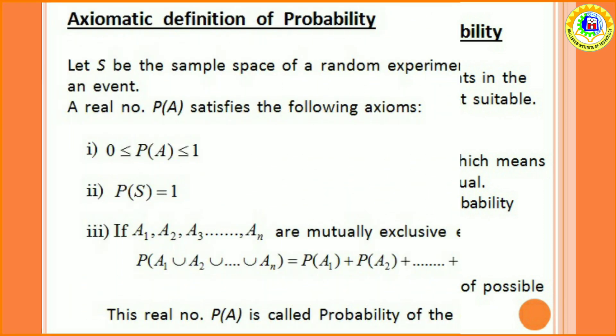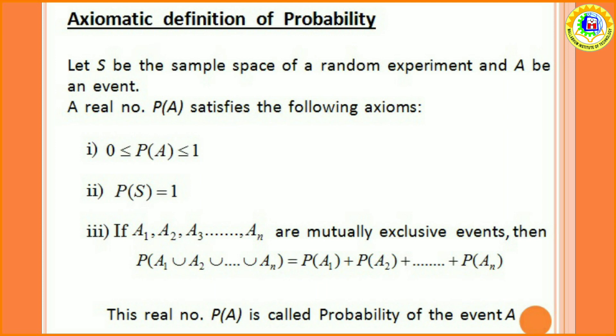Axiomatic definition of probability. Let S be the sample space of a random experiment and A be an event. A real number P of A satisfies the following axioms. Number one, P of A lies between 0 and 1. Number two, P of sample space is 1.